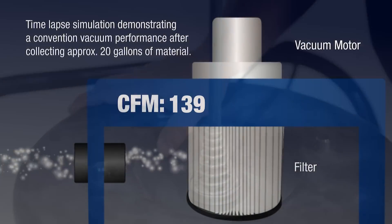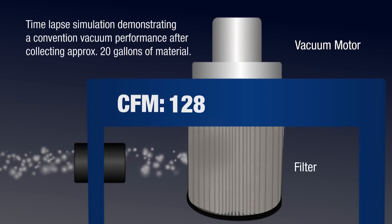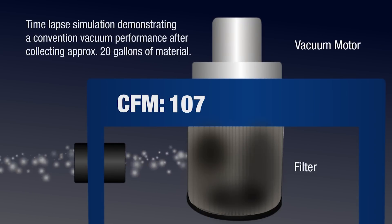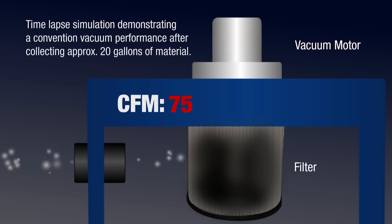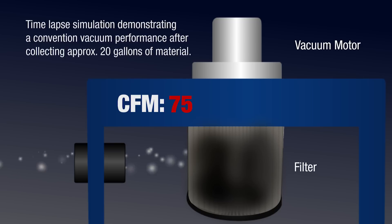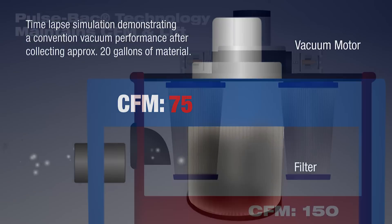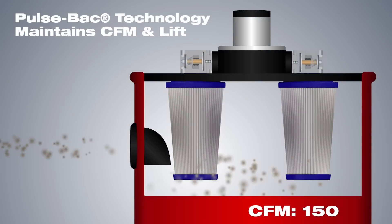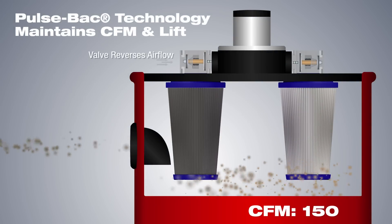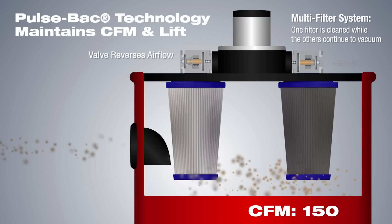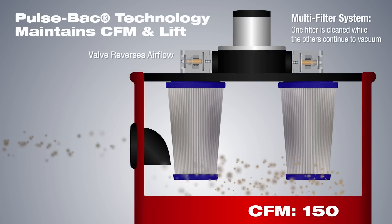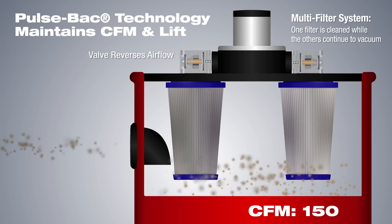Other tests have shown that vacuums can lose up to 50% of their airflow as the filter clogs, and depending on the material, this can happen quickly. So under real-world conditions, to stay within the requirement, filter cleaning mechanisms and monitoring equipment will have to become fairly regular on the job site. The other option is to purchase a vacuum with an automatic filter cleaning mechanism.